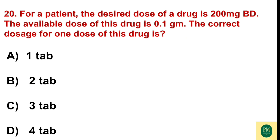For a patient, the desired dose of a drug is 200 mg BD. The available dose of this drug is 0.1 g per tablet. The correct dosage for one dose is: Option A: 1 tablet. Option B: 2 tablets. Option C: 3 tablets. Option D: 4 tablets. The correct option is Option B — 2 tablets.